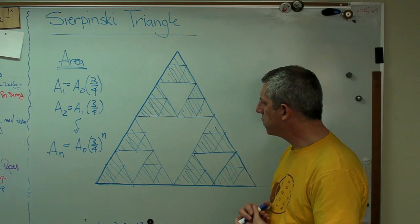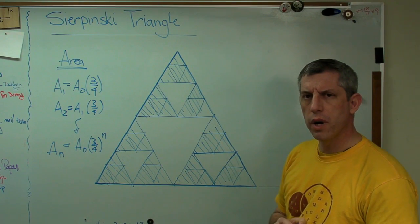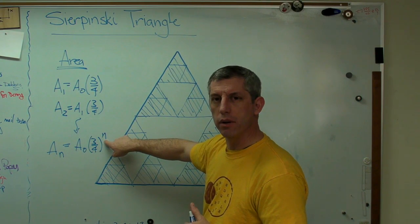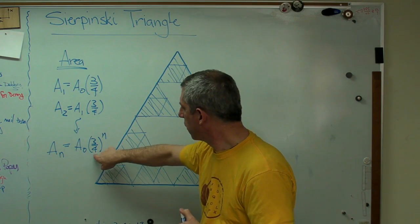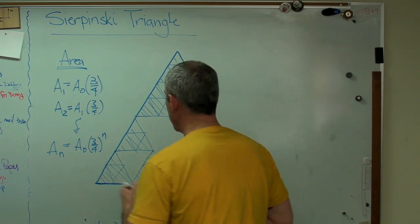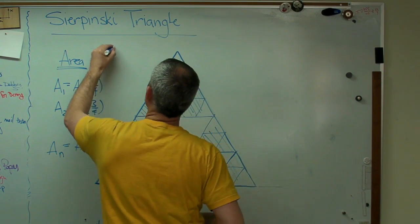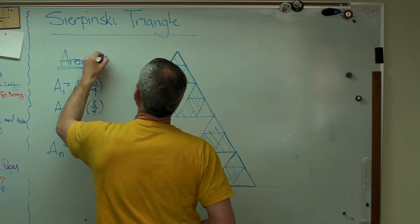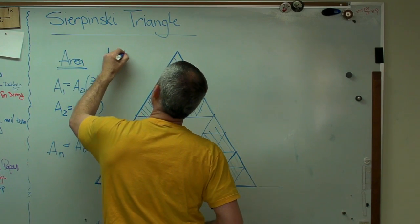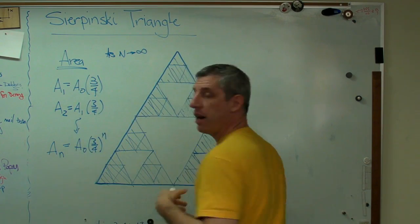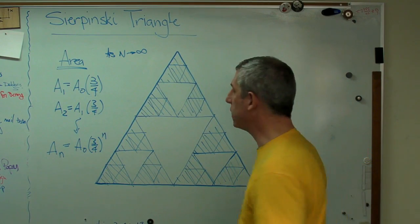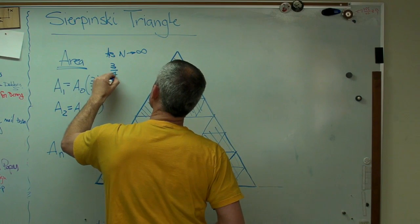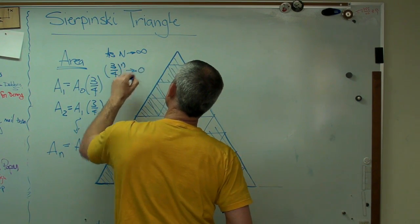Well, okay, what happens when you take 3 over 4 and multiply it by itself n times, what if n is a really big number, like a hundred or a thousand? This number right there in the parentheses becomes zero. So, as n goes to infinity, now I can never actually get to infinity, because infinity is not a number, it's a concept, then 3 quarters to the n power goes to zero.